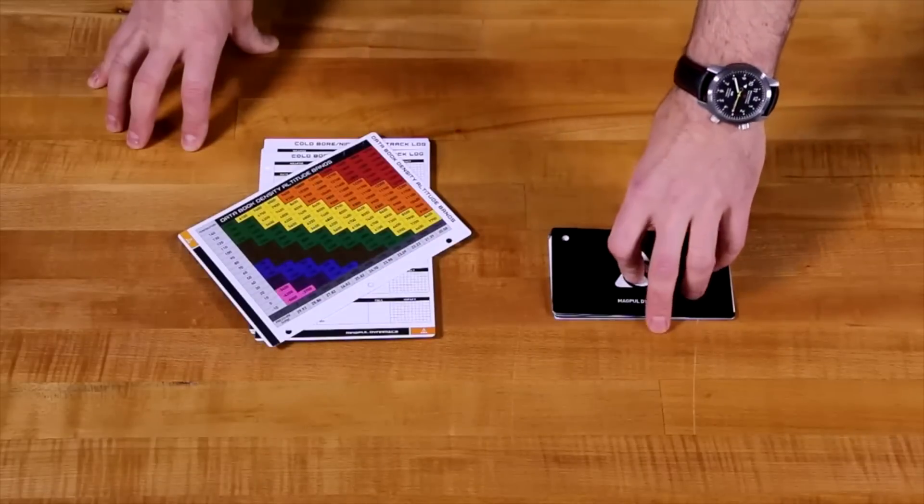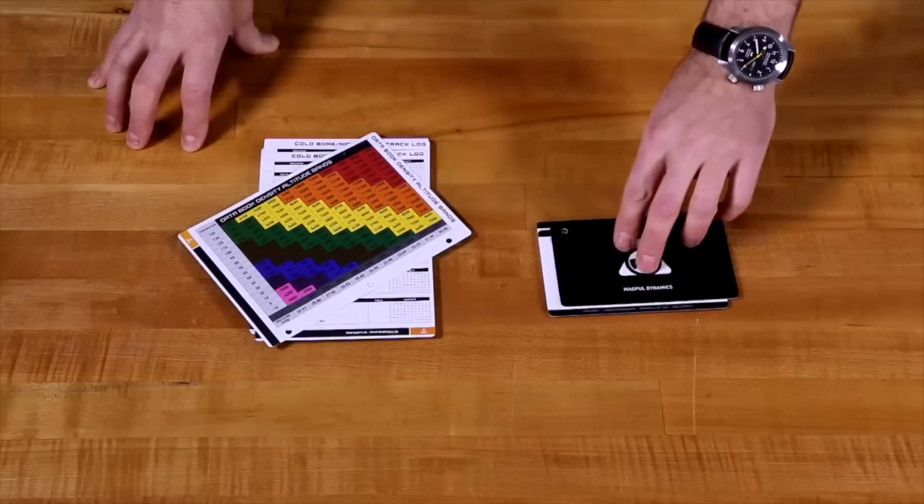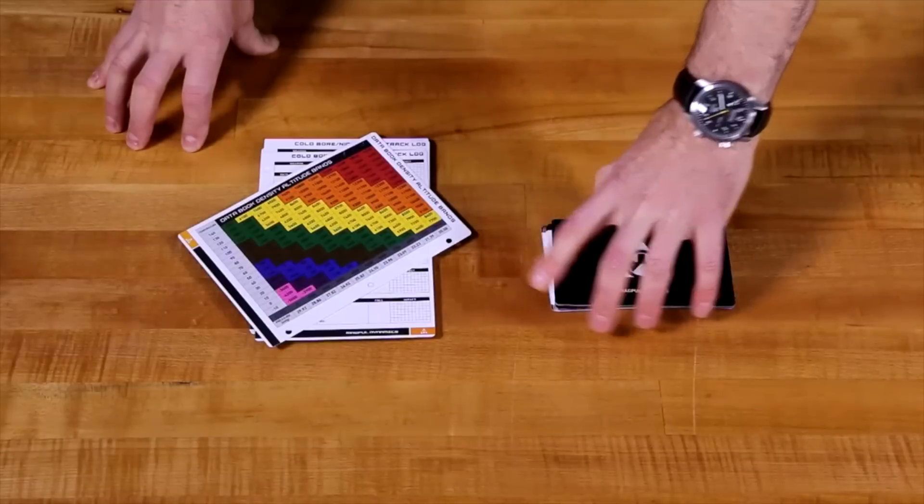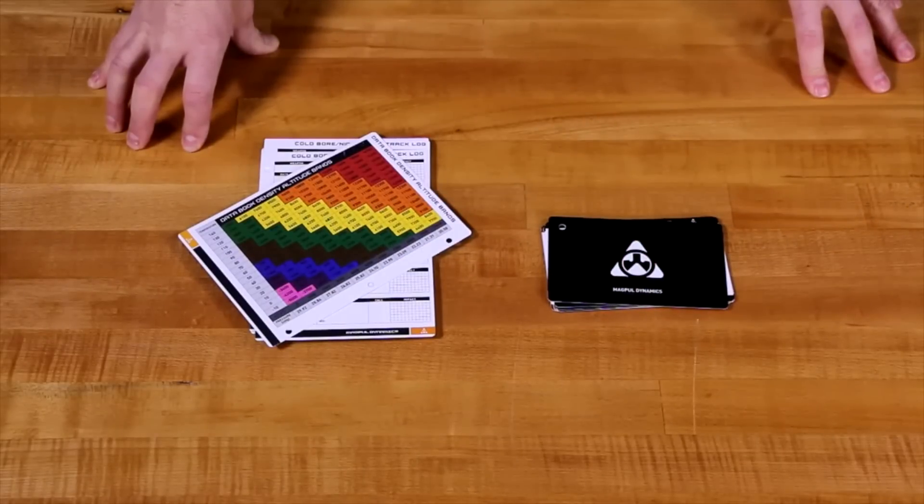The quick reference cards are sized perfectly to fit in sleeve pouches or most commander or quarterback armboard mounts and are based on the same density altitude color code system. The firing solutions from the data book are simply copied onto the QR cards, which are then easily referenced in the field.